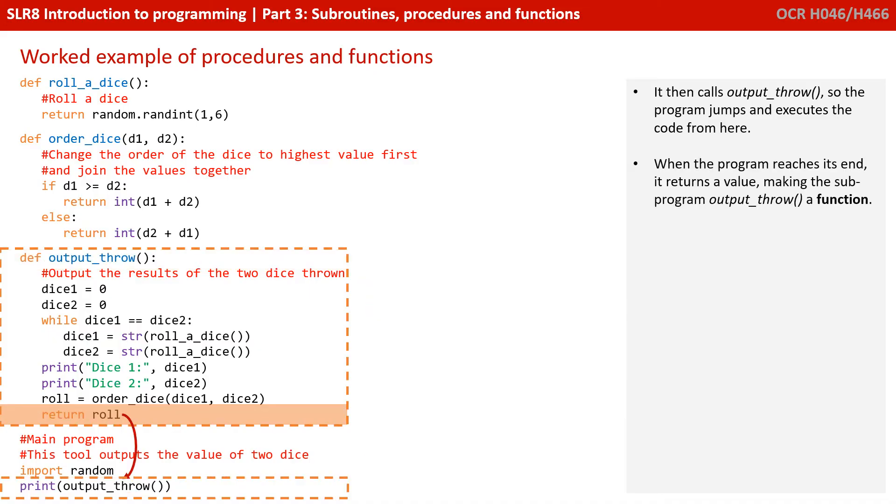When the program reaches the end, we can see it says return a value, return the contents of the variable role. At this point, the program jumps back to where it left off before it entered this subroutine. Because we're returning a value, we know that this subroutine is actually a function.